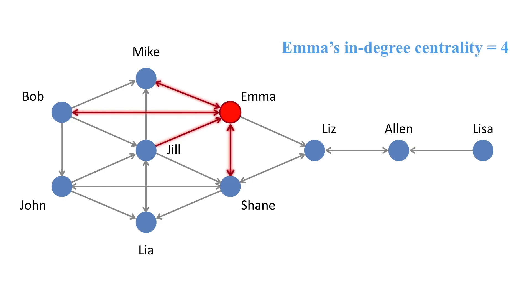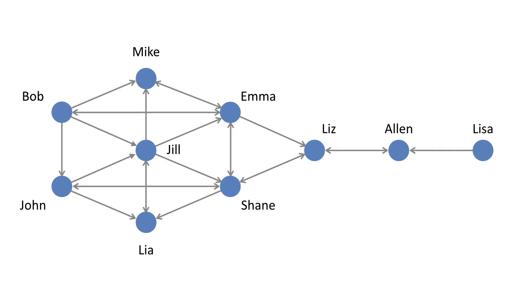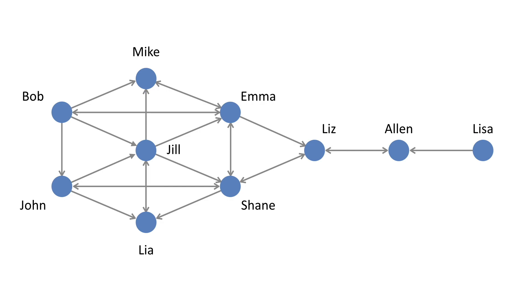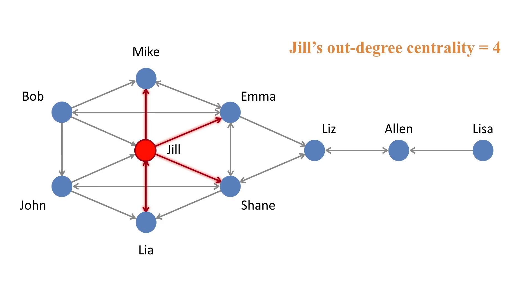Looking at our examples, we see that Emma and Shane are the important people in the network in terms of in-degree centrality — they're equivalently important, both receiving the same number of ties. Jill is no longer the central person, because Jill is only receiving two ties while sending out more. If we look at out-degree centrality, though, Jill comes back into the picture because she is sending out lots of ties to the rest of the network.